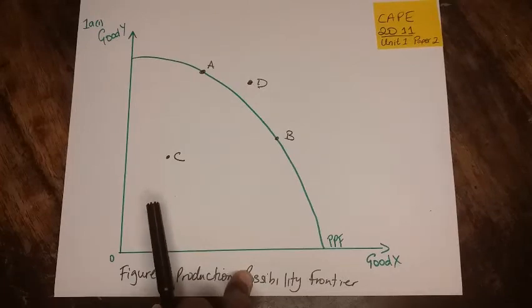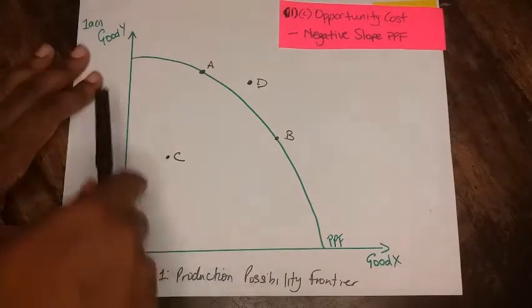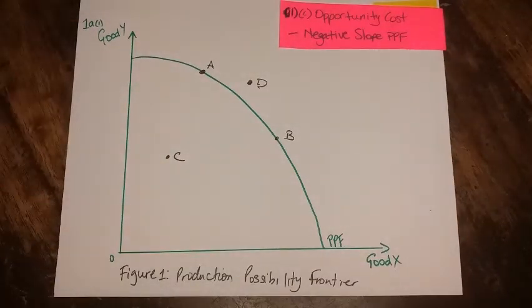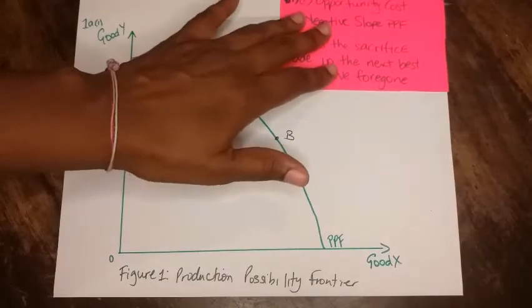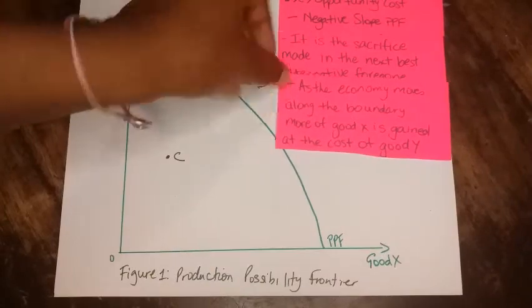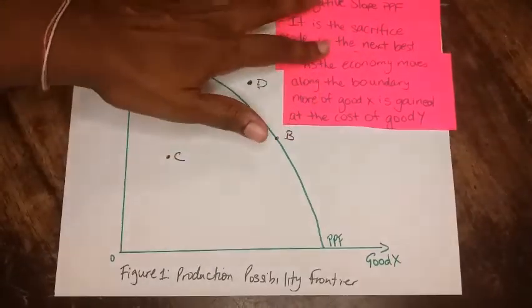You need to mention we have opportunity cost because the slope is negative, meaning downward sloping. And of course you will define it, so it is the sacrificing of the next best alternative forgone, and then you will illustrate it in our example.